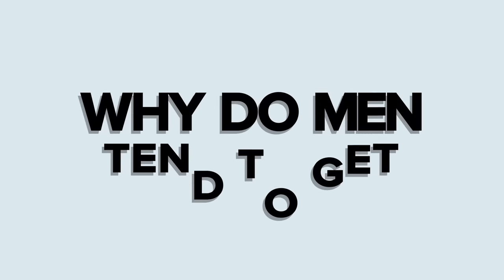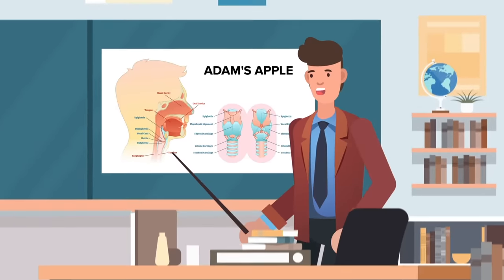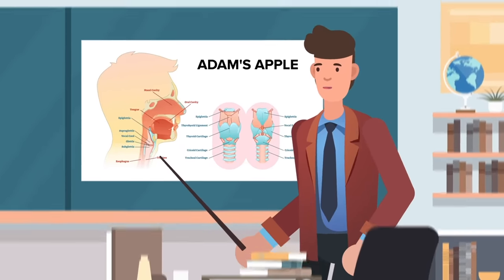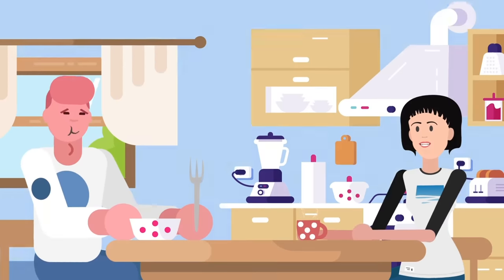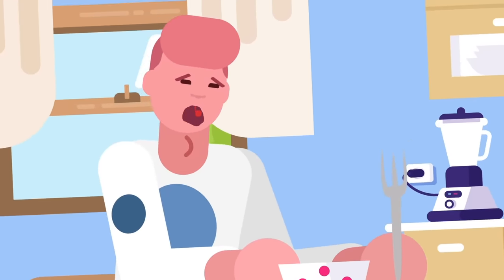What about the Adam's apple? Why do men tend to get bigger ones? The part of the body is made of cartilage, and it gets bigger when you hit puberty. Men usually have a larger larynx, an Adam's apple, and that's why they usually have deeper voices.